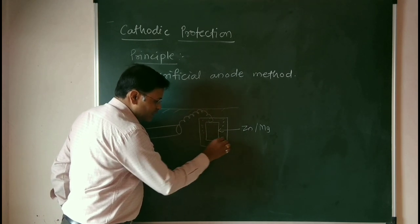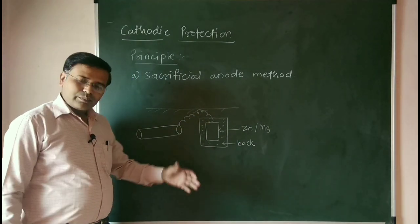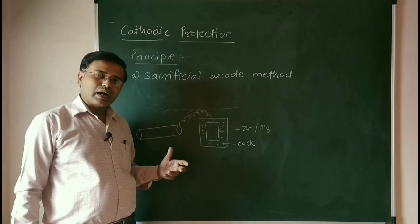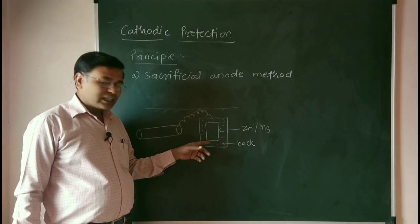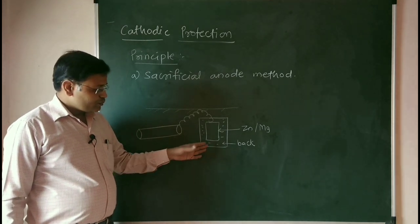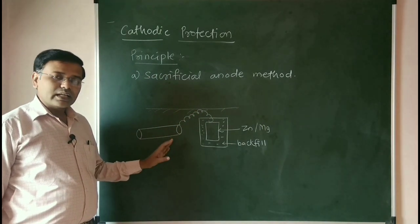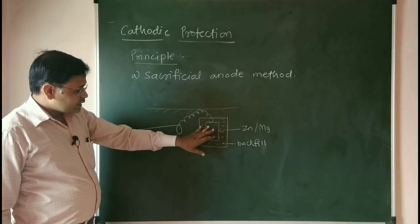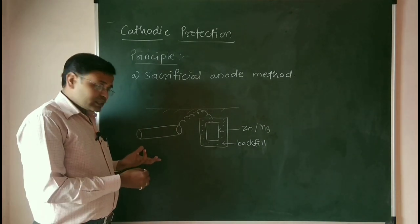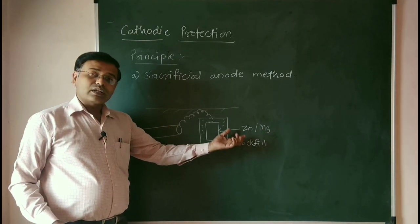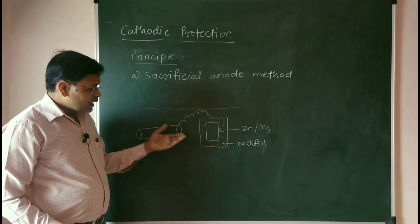The backfill is just for better electrical contact, similar to earthings used in farms for electrical contact. When a highly reactive metal like zinc or magnesium is connected to the pipeline — which was previously getting corroded — using an insulated wire, now what will happen?